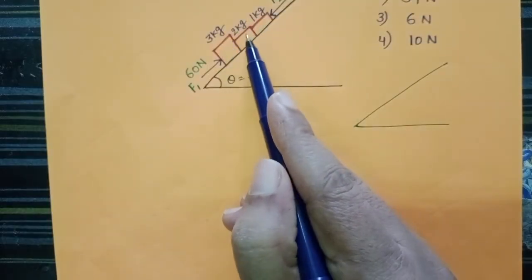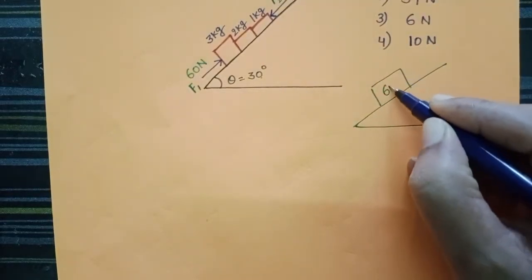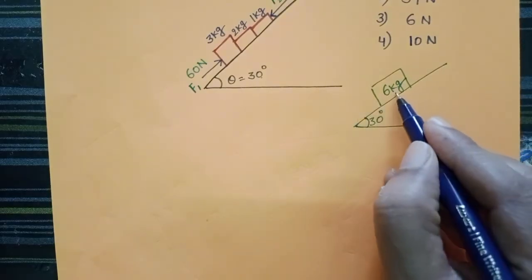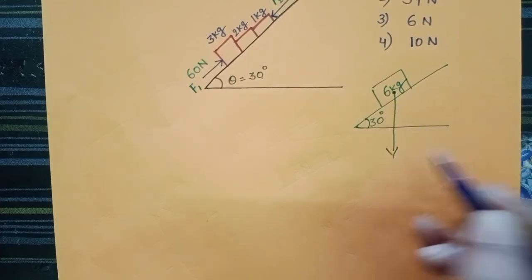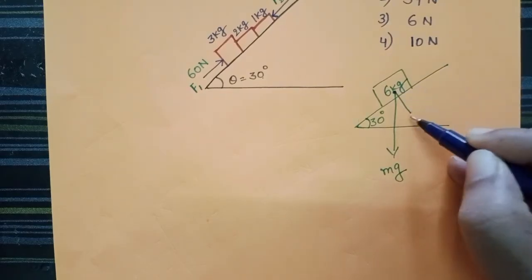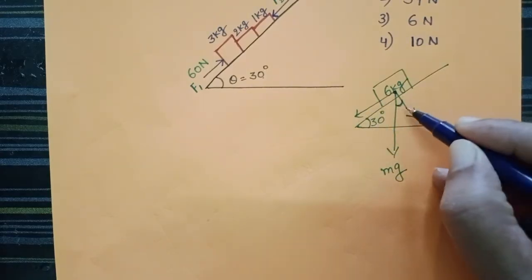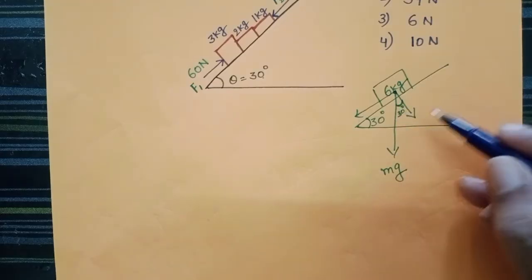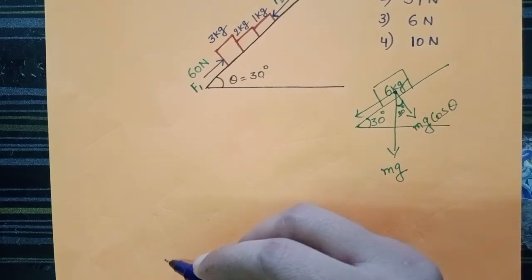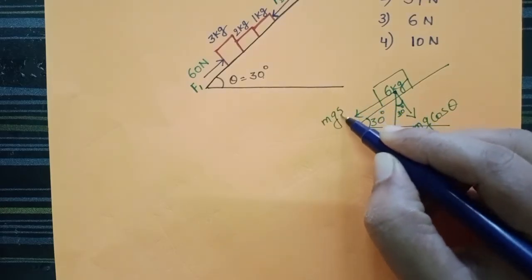The total mass of these three blocks is 3 plus 2 plus 1, which equals 6kg. The angle of inclination is 30 degrees. The weight of the block is acting in the downward direction, but this weight is resolved into two rectangular components. Here the angle is 30 degrees, so along the normal direction the component is mg cosθ, and along the inclined surface in the downward direction it is mg sinθ.